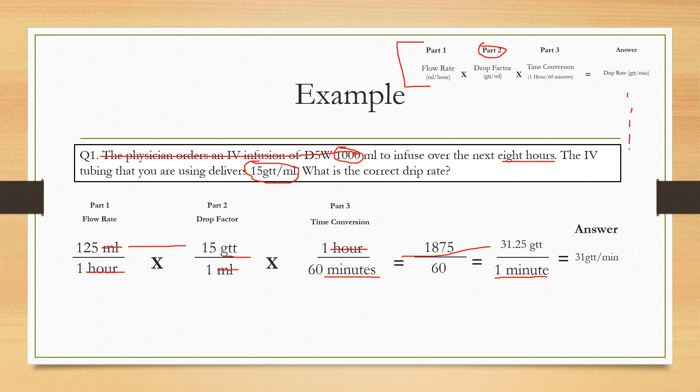Now one more part to this is the fact that you can't have a quarter of a drop. You're never going to be able to calculate that. So what you're going to do is you're just going to round to the nearest drop. So this answer would just be 31 drips per minute. You would ignore the 0.25 because you simply can't see a quarter of a drop falling through in a minute.